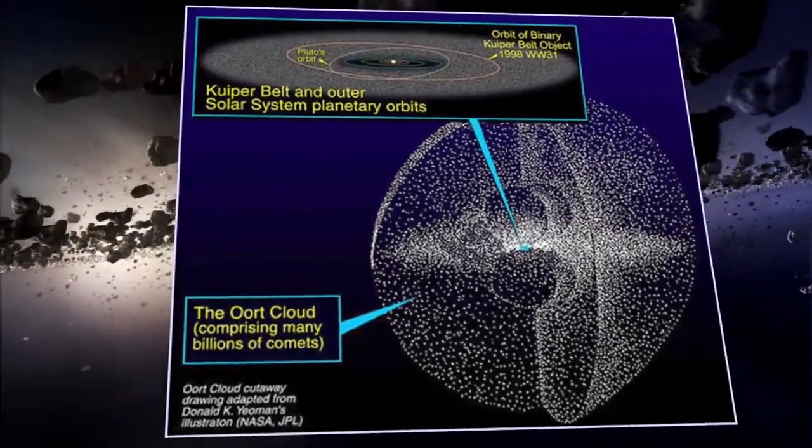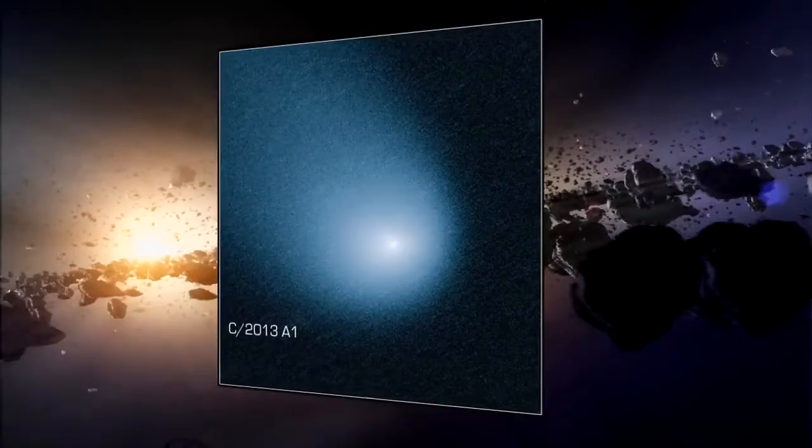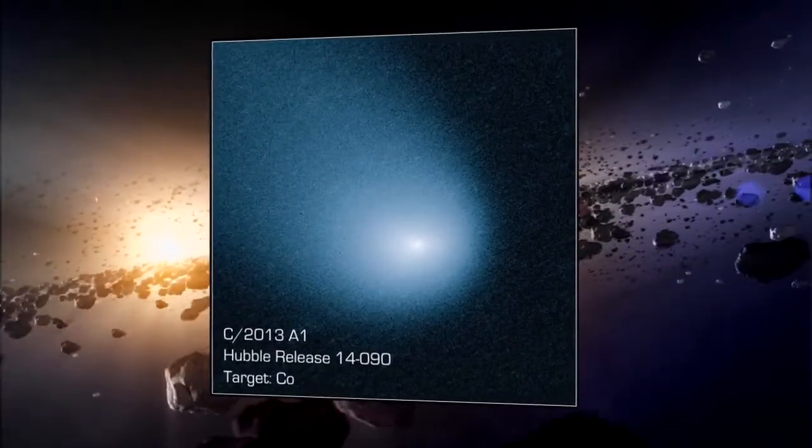Extending nearly one light year from the Sun, the Oort Cloud is thought to be the reservoir of comets, like C2013A1, better known as Comet Siding Spring.